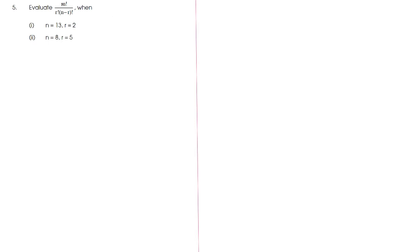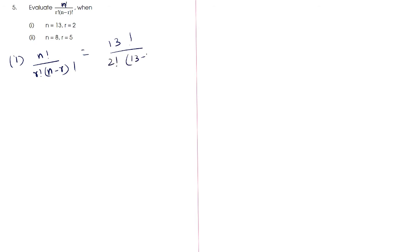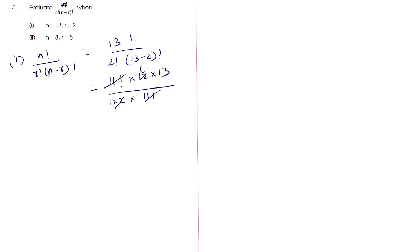Next question: evaluate n! / (r! × (n - r)!) for two cases. First: n = 13, r = 2. So 13! / (2! × 11!) = (11! × 12 × 13) / (2! × 11!). The 11 factorials cancel, leaving (12 × 13) / 2 = 156 / 2 = 78.